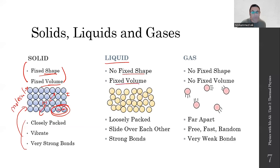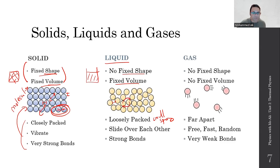Liquids have no fixed shape, but they do have a fixed volume — they take the shape of the container they're in. In terms of molecules, they're loosely packed, with small spacing between them, and they slide over each other. The bonds between them are still strong — not as strong as in a solid, but strong. This is why they have a fixed volume: it's thanks to the strength of these bonds.